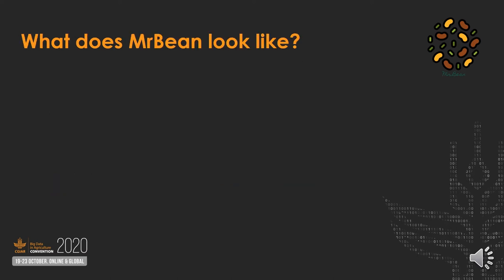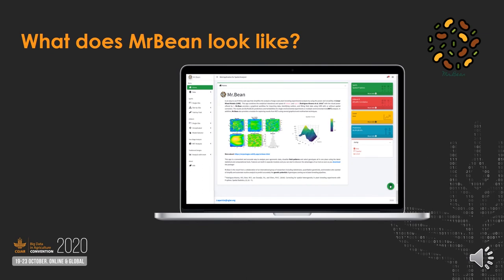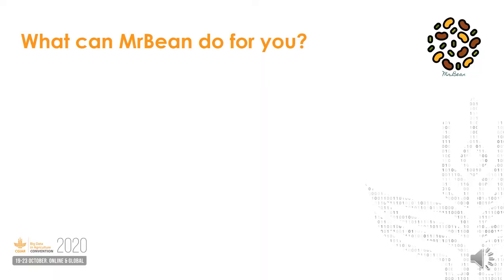This is basically the home page for Mr. Bean. If you want to give it a try, you can use your cell phone or your computer by following the next link. What can Mr. Bean do for you? First of all, it allows you to import data regardless of the file type. It also allows you to connect with a breeding management system, so you can get the data directly from Mr. Bean.